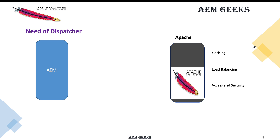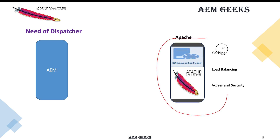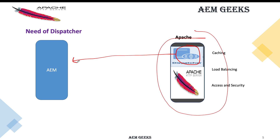In the same way, we need something that knows both AEM and Apache. Apache can handle caching, load balancing, access, and security on its own — those are basic features of Apache. But Apache doesn't know how to communicate with AEM. So Adobe provides a module — called the dispatcher — which sits inside your web server and acts as that bridge, telling Apache how to communicate with AEM.